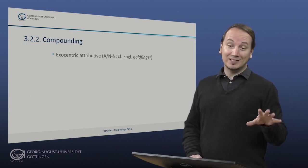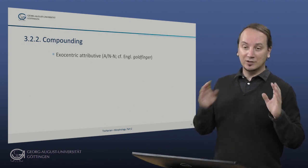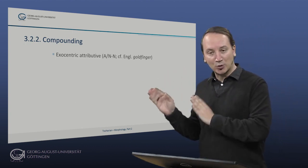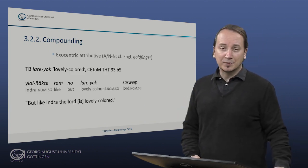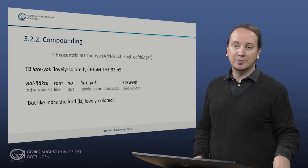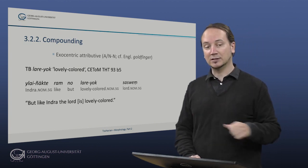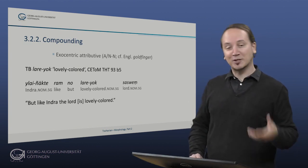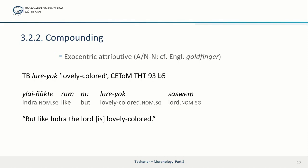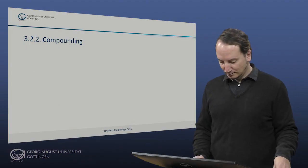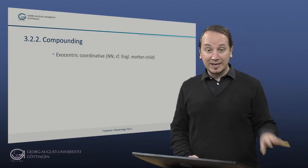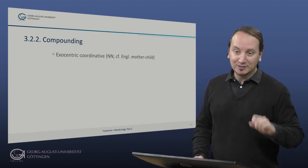We're now turning to exocentric compounds and start with the attributive relation of the non-head, either in an adjective noun or a noun-noun structure. We have our compound Lara Jok here in a passage from the Aranemi Jataka, a Jataka again a genre concerned with the previous lives of the historical Buddha Gautama and this is involving another king called Aranemi. So here's the passage, Jileinjekte, which is Indra, and also a compound as you can see, Jileinjekte Ramno Larajok Sasven, but like Indra, the lord is lovely colored.